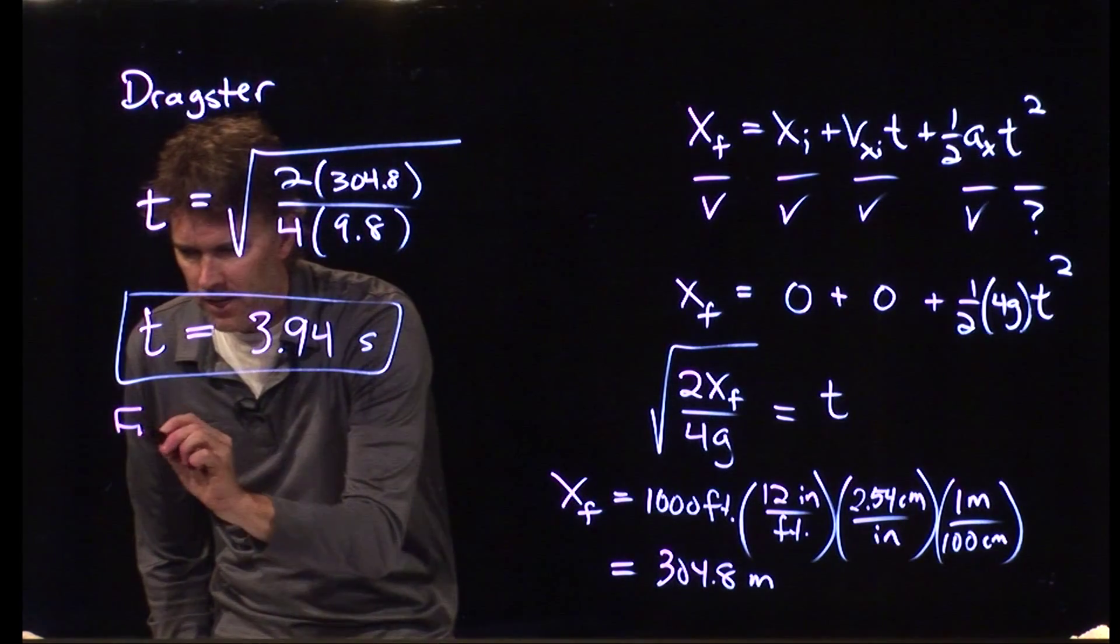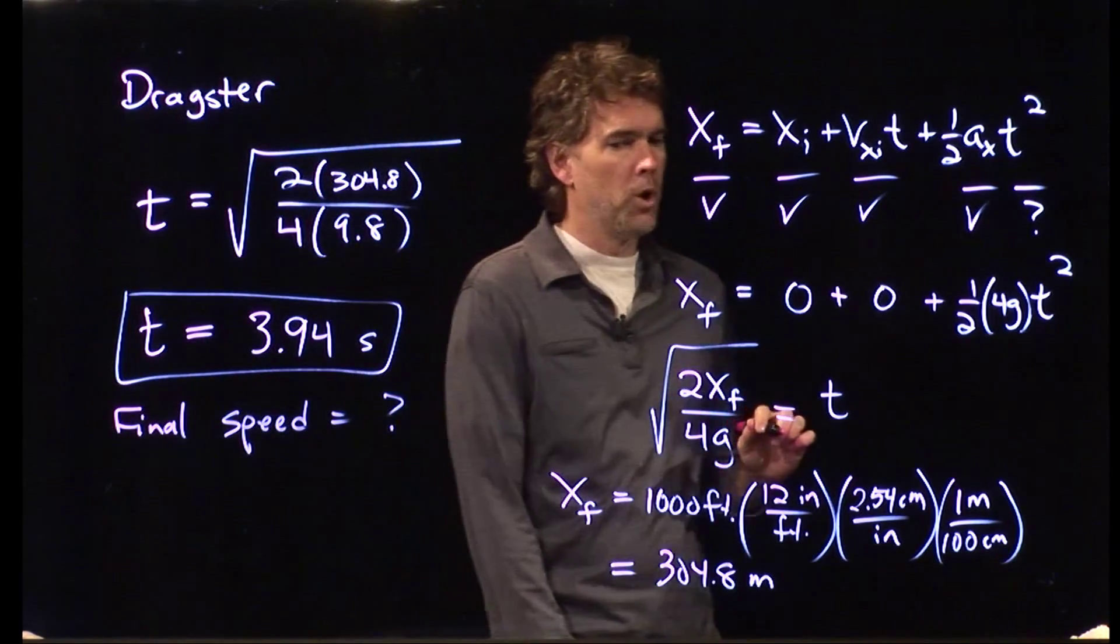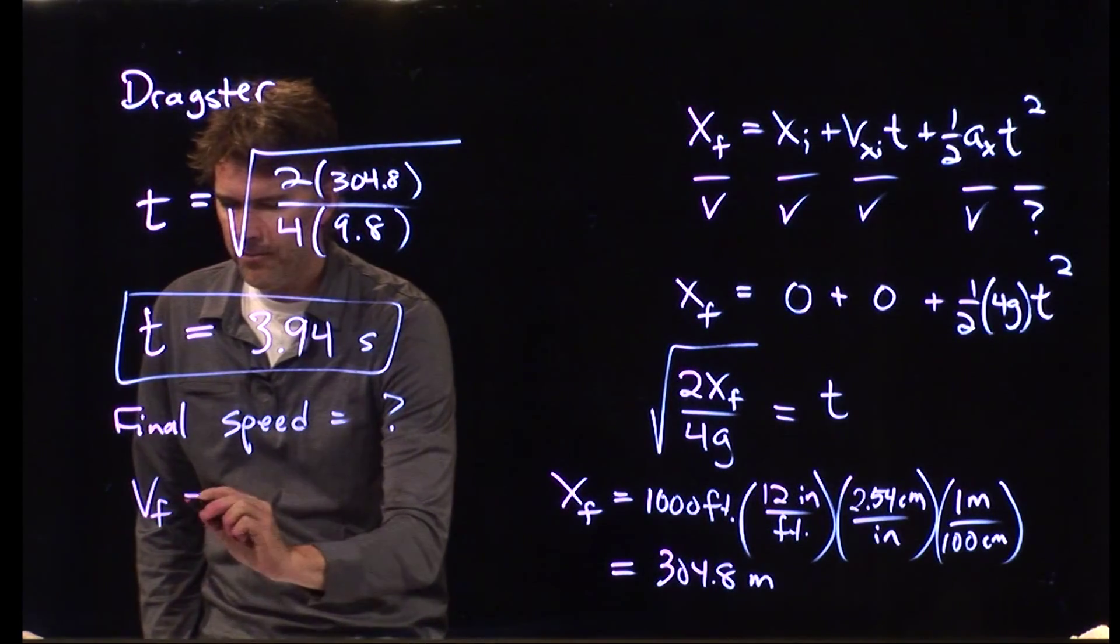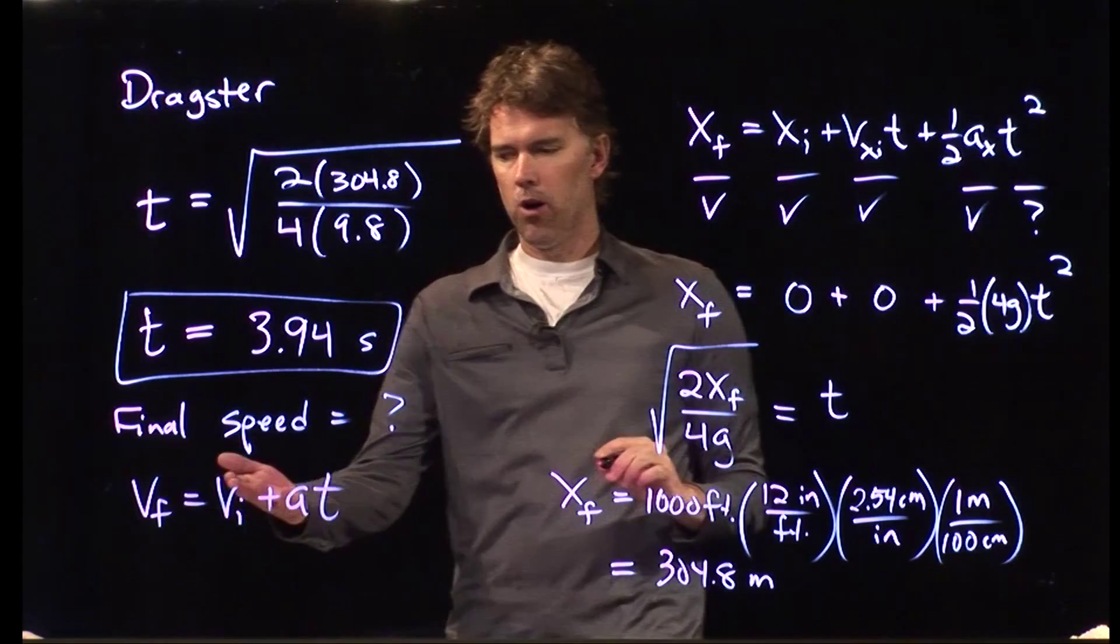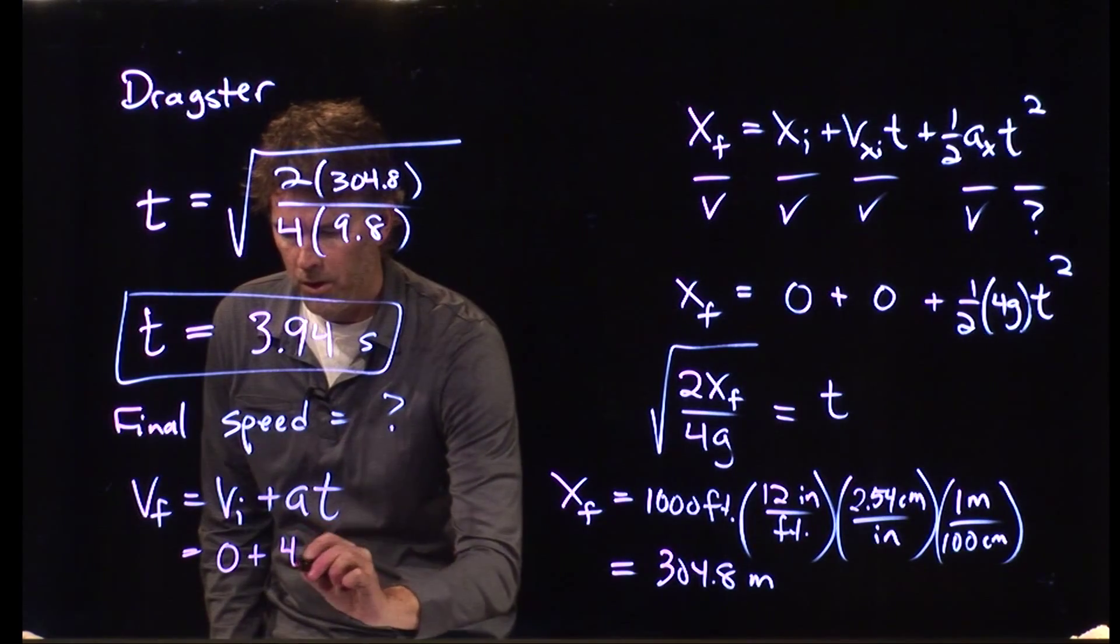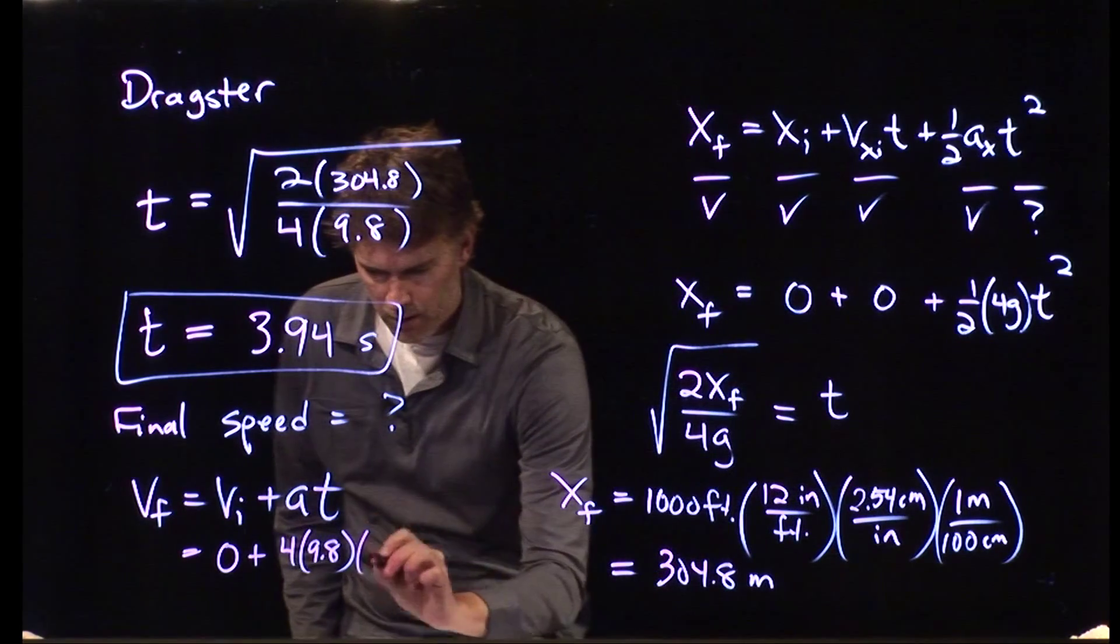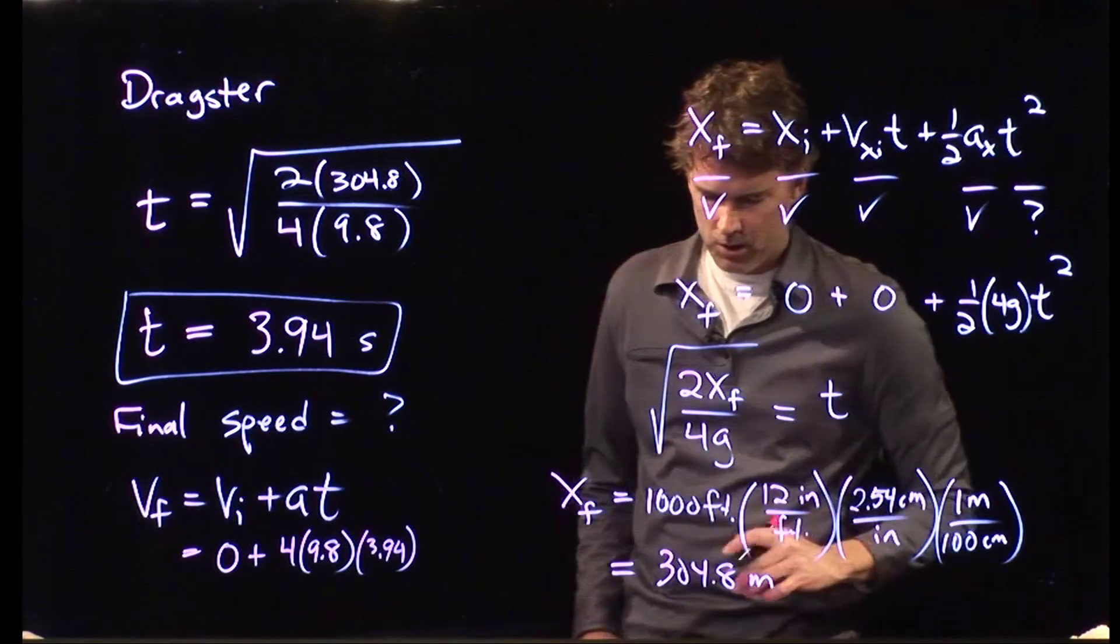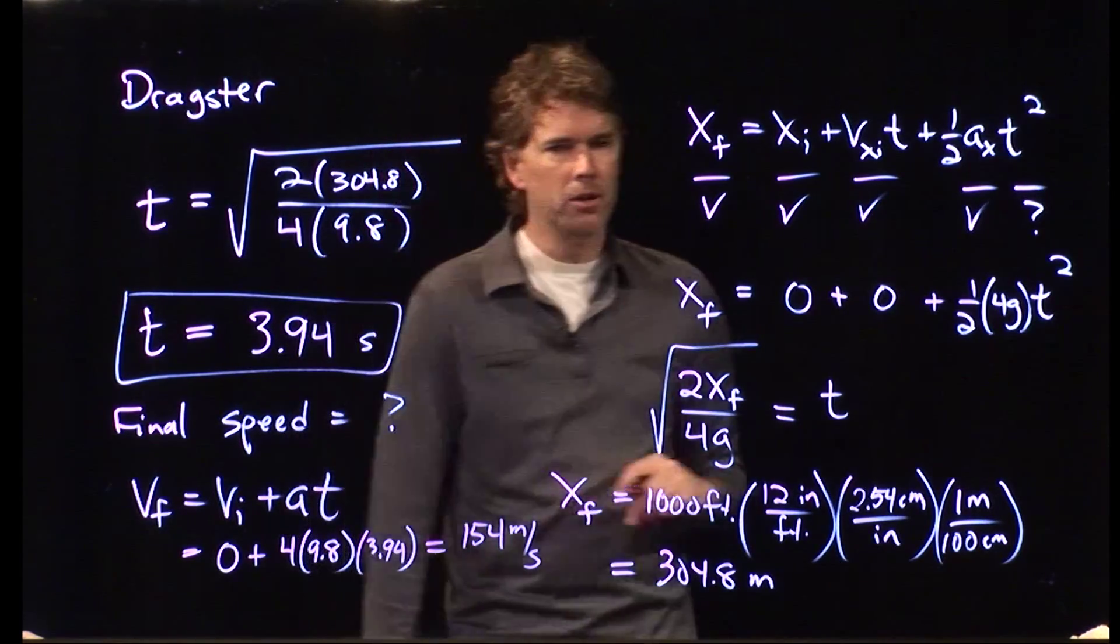Let's see how fast that is. What is the final speed of that dragster? Well, now we can go back to our other equation. Our other equation was v final equals v initial plus a times t, and now we know all those numbers. v initial is 0, a we said is 4 times g, 9.8 meters per second squared, t is now 3.94 seconds. And if you plug in those numbers, we should get 154 meters per second.